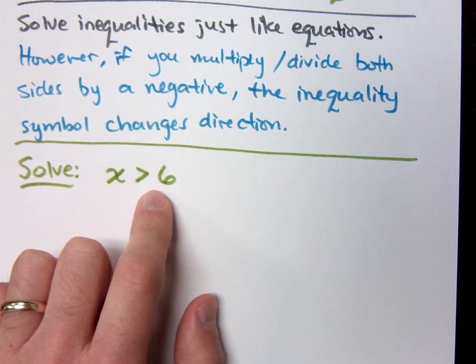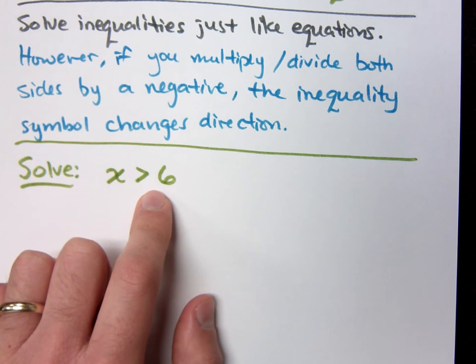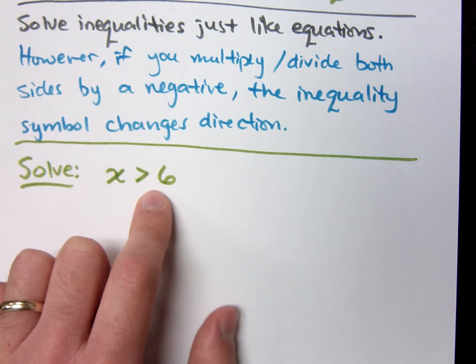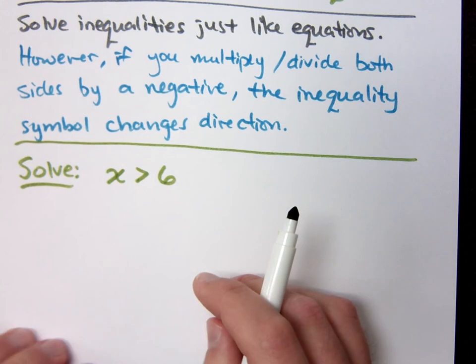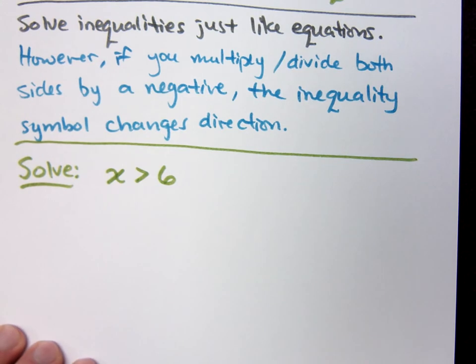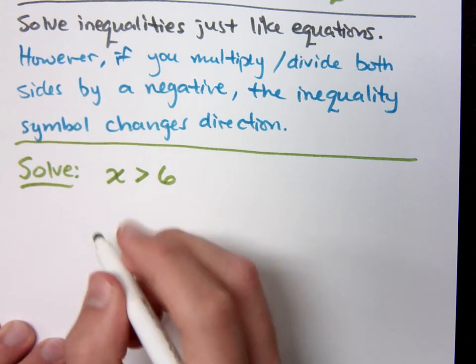6.000000003. Right? 1 million. So how many answers are there for this inequality? An infinite number of answers, an infinite number of solutions. So since I can't write all of those, I'm going to show you two ways we have for expressing that.